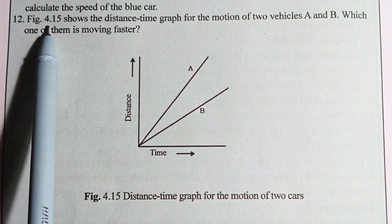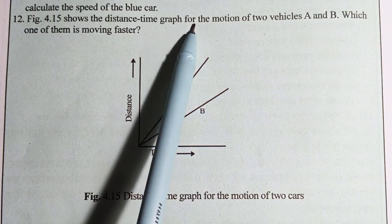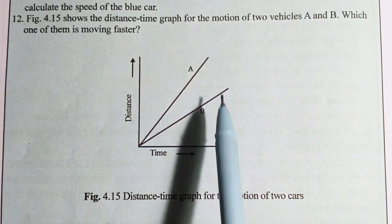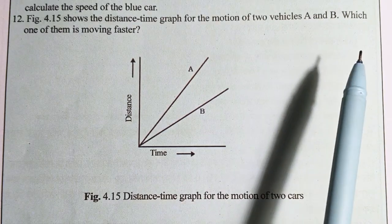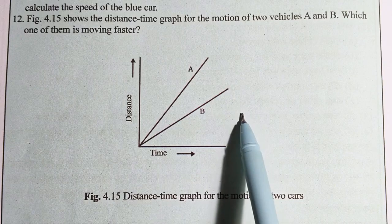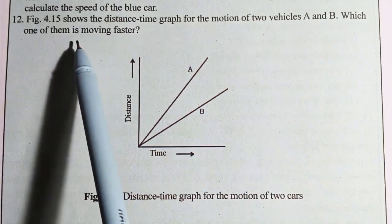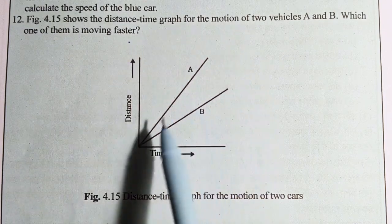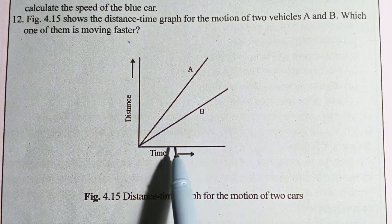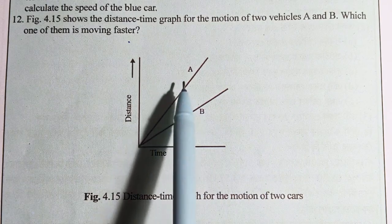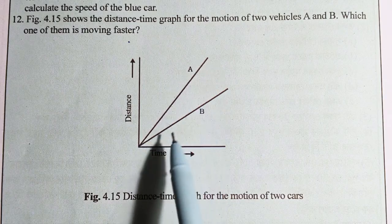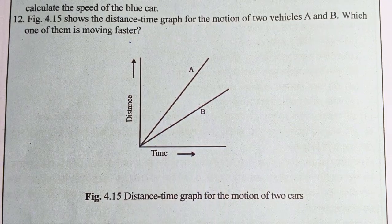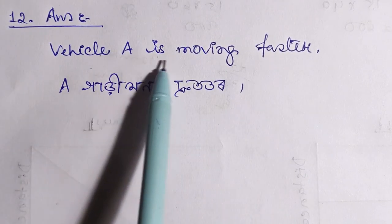Question number 12: figure 4.15 shows the distance-time graph for the motion of two vehicles A and B. Which one of them is moving faster? A is moving faster.